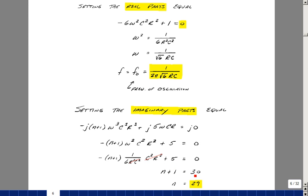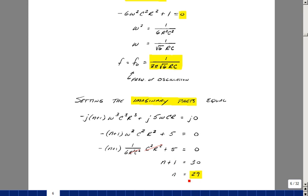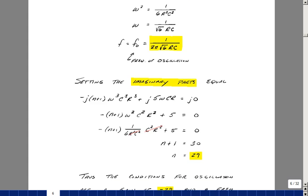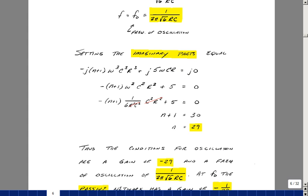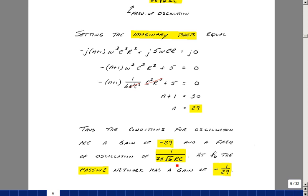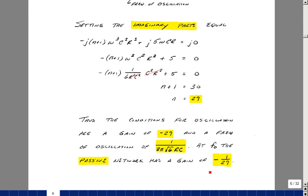These become what are called the conditions for oscillation. The amplifier needs to have a gain of minus 29, because it's an inverting amplifier. And at that frequency of omega naught, which is 1 over 2 pi square root of 6 RC, we'll have a sine wave created. And at this frequency, the passive circuit will have a gain of 1 29th, with a phase angle of 180. We're going to verify this with some SPICE simulation, as part of our lab report.